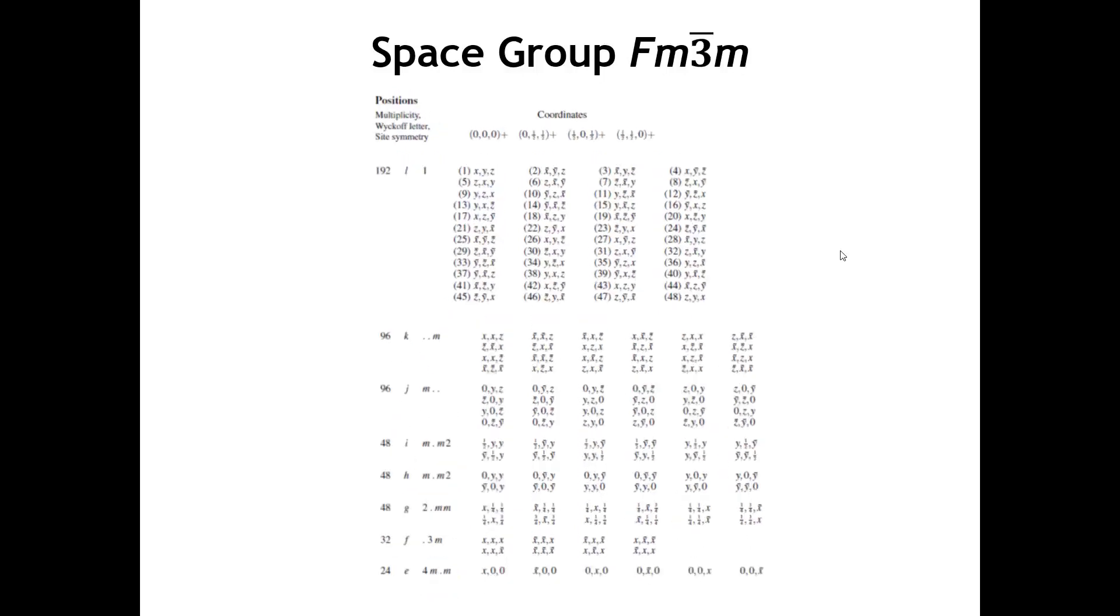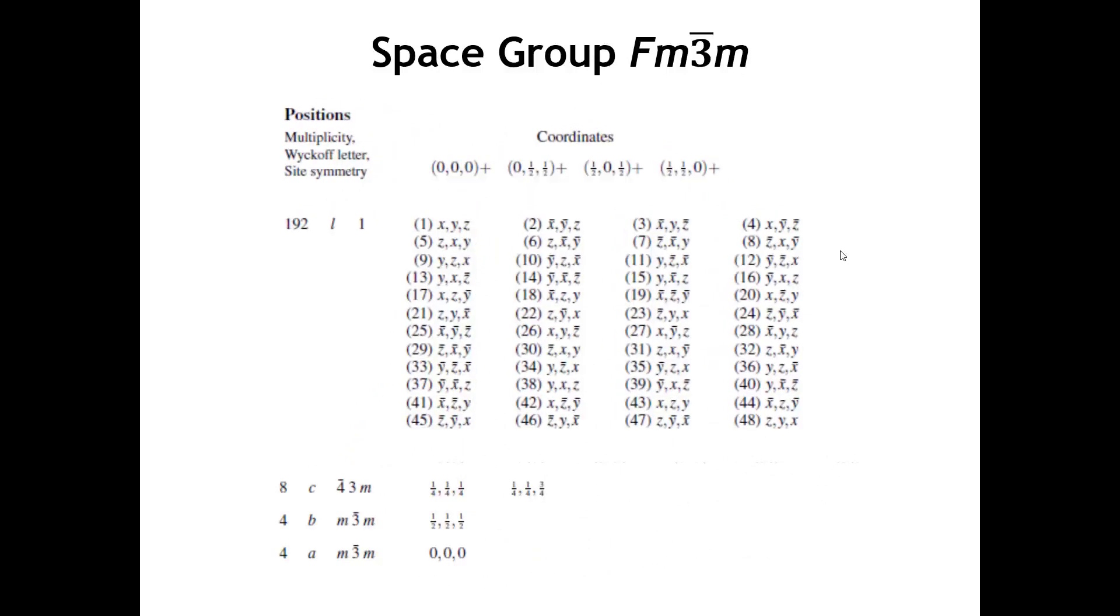Let's zoom in a little bit so we can see the ones that matter to us. You can see that the general position has a multiplicity of 192. So, that means if we are to place an atom at some arbitrary position in the unit cell, not associated with any symmetry element, then we're going to generate 191 other atoms within the unit cell. I'm sure you can imagine that in a box that's 5.5 angstroms by 5.5 angstroms by 5.5 angstroms, you cannot fit 192 atoms in such a small box.